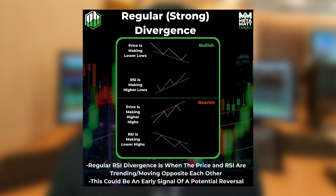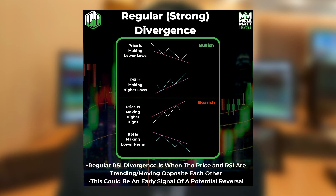Basically, during an uptrend, if the RSI and the price are on the same page — meaning both going up — that shows strength in the uptrend. However, when they aren't on the same page, meaning the RSI isn't going up, that could mean the trend is losing steam.